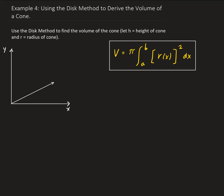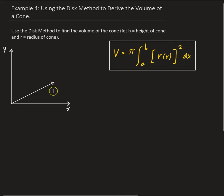In this example, we are going to use this method to derive the volume of a cone. We're going to assume that h is equal to the height of the cone and r is equal to the radius of this cone. We're going to take this line here and rotate it around the x-axis, and the corresponding region for that is going to give us the volume of a cone.